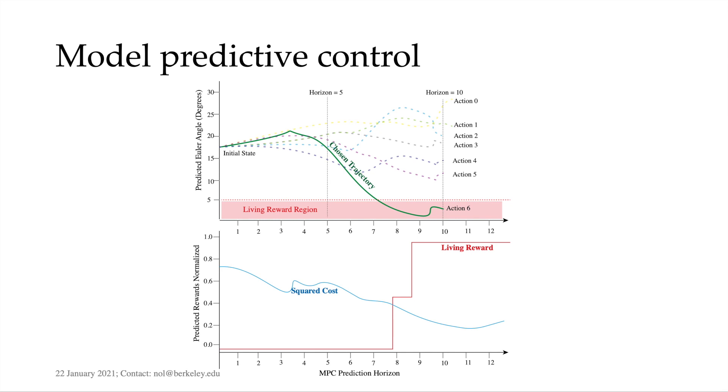Model predictive control is powerful and flexible, but if the reward surface is flat within the prediction horizon, as in the case for some discrete rewards, it cannot make decisions. The actions selected are random.